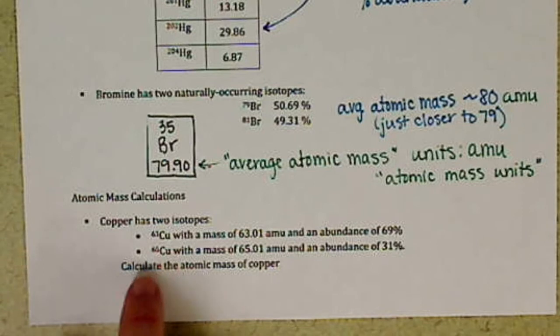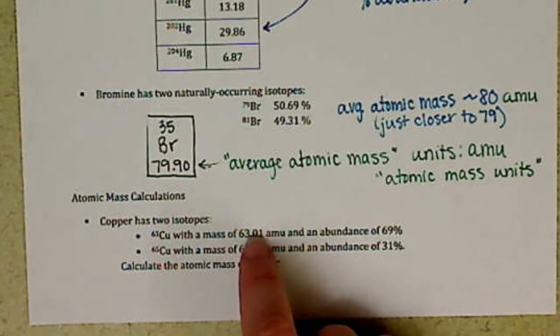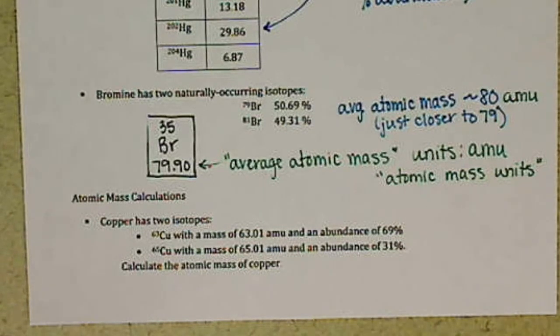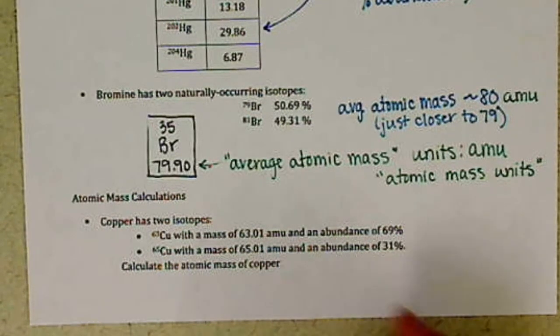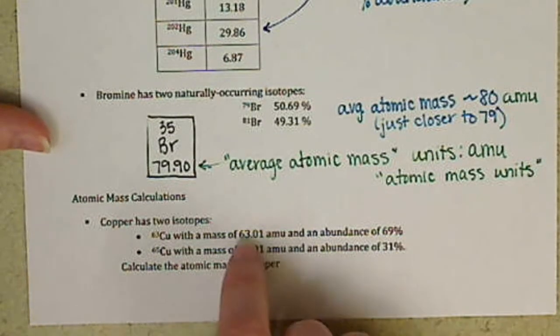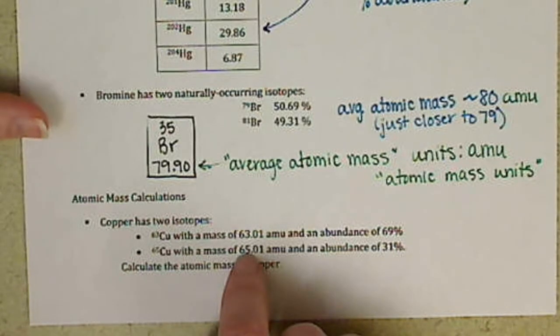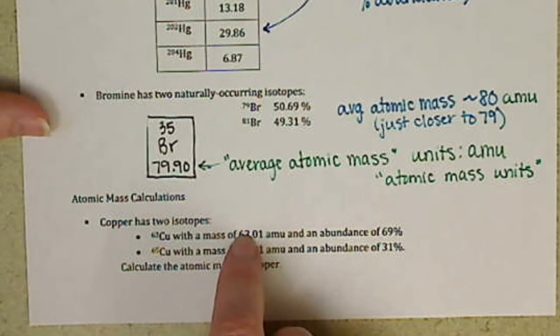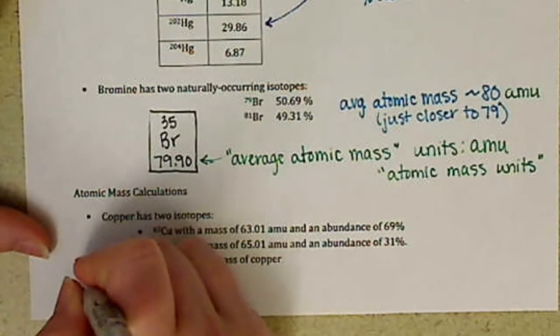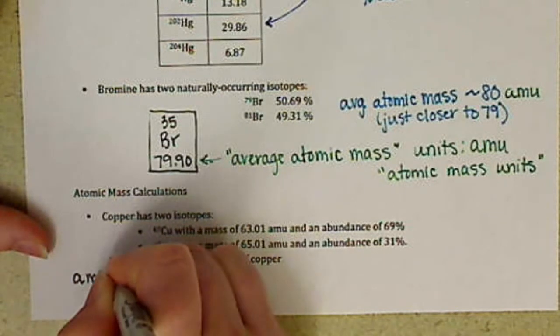So if we look at copper, we have two isotopes of copper, and we want to calculate the atomic mass of copper. Now we're given the masses of each of those isotopes there, and we have our percent abundance. Now let's just look at these numbers roughly. Which value, the 63 or the 65, do we think our average is going to be closer to? Hopefully you said the copper-63. It has a higher abundance, so we should see the average be closer to 63 than it is to 65. So it's not going to be smack dab in the middle. It's going to be closer to 63.